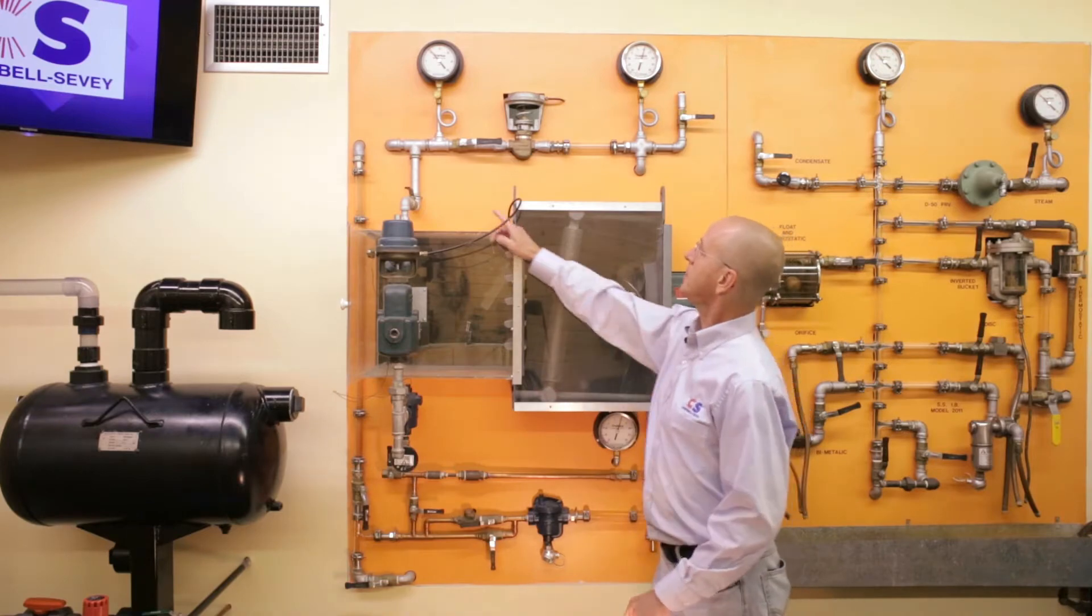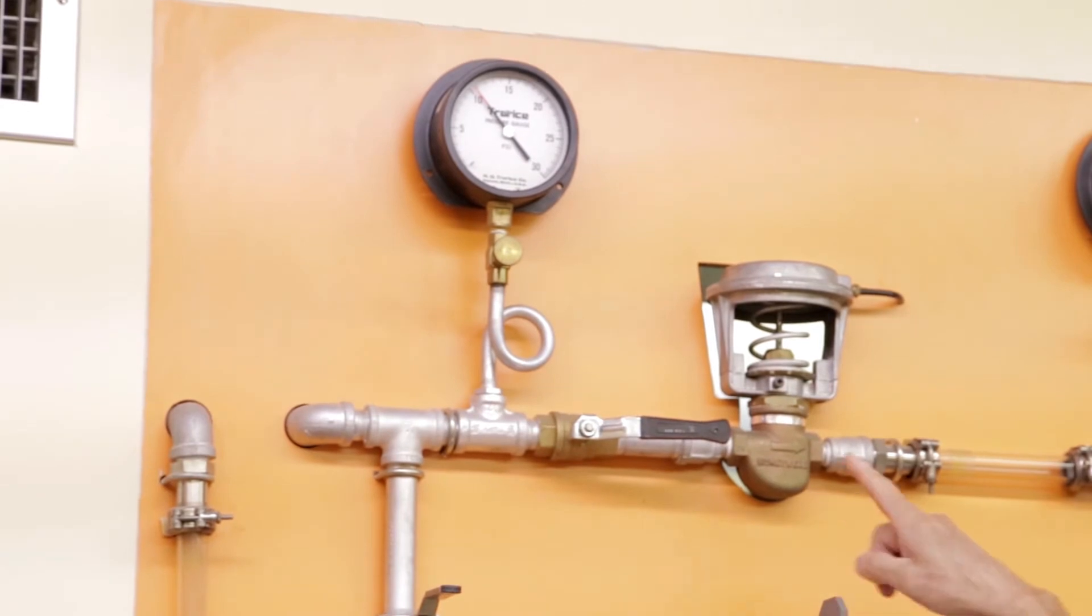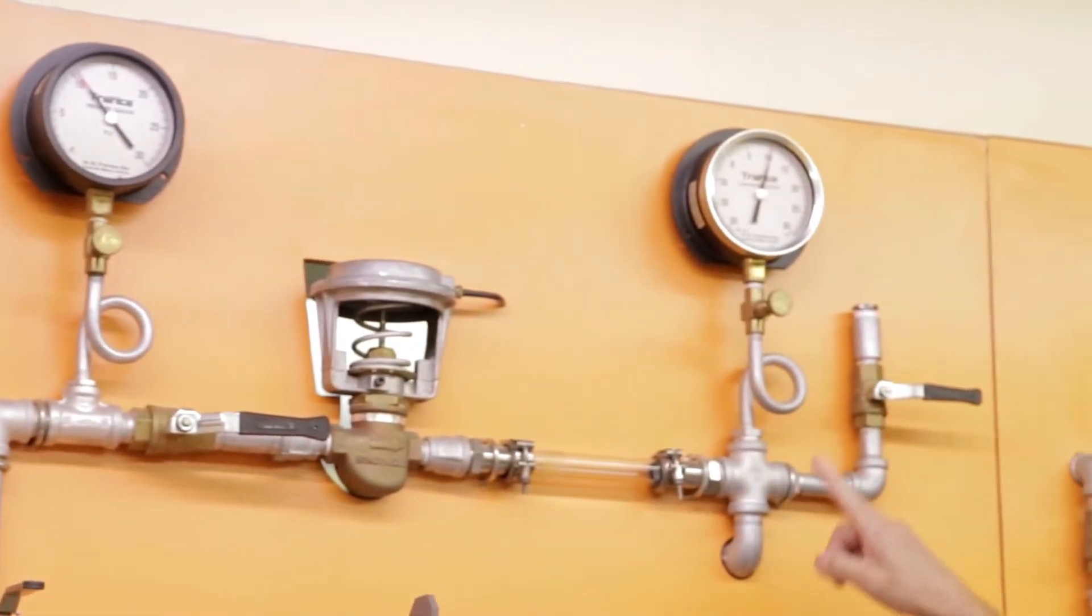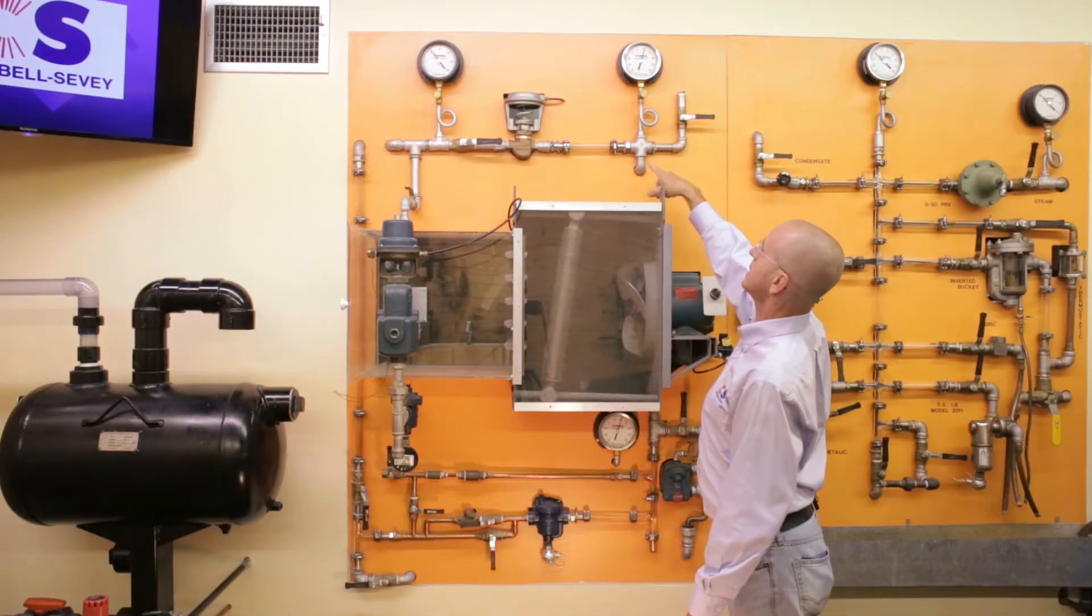So the way this is piped in, we've got boiler pressure steam here. You can see on the gauge about 10 psi or a little more, a control valve. We actually put a gauge downstream of the control valve, which is fairly rare, but just so you can see the pressure inside our coil.